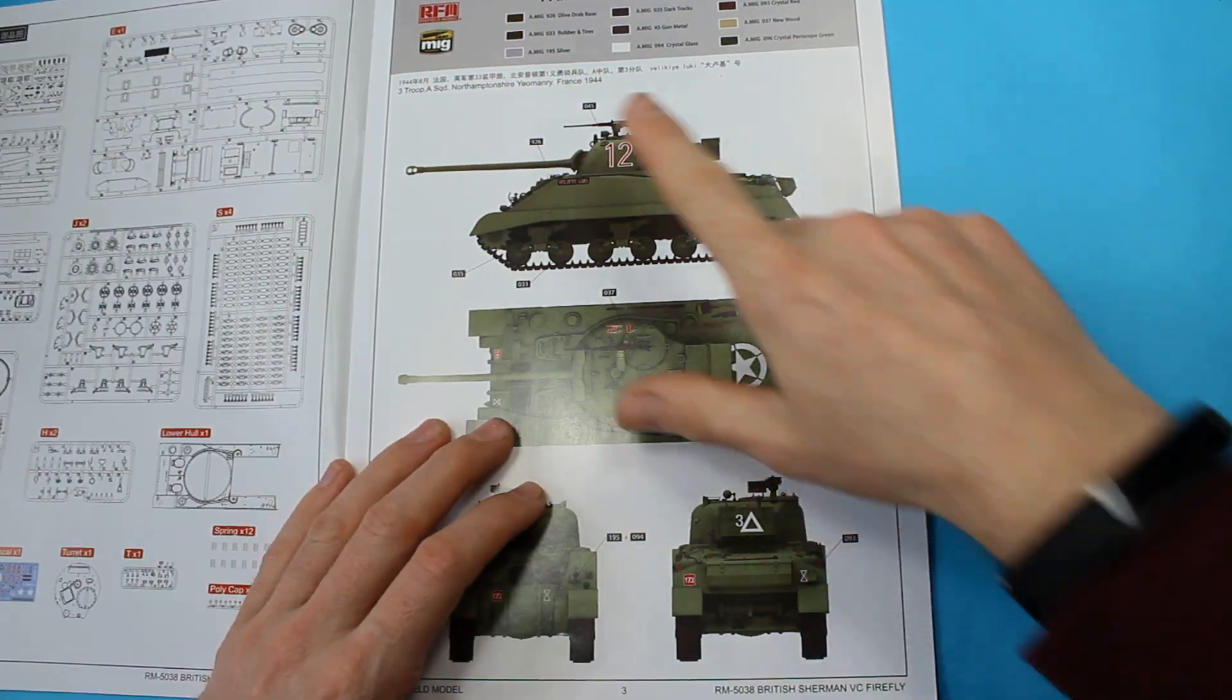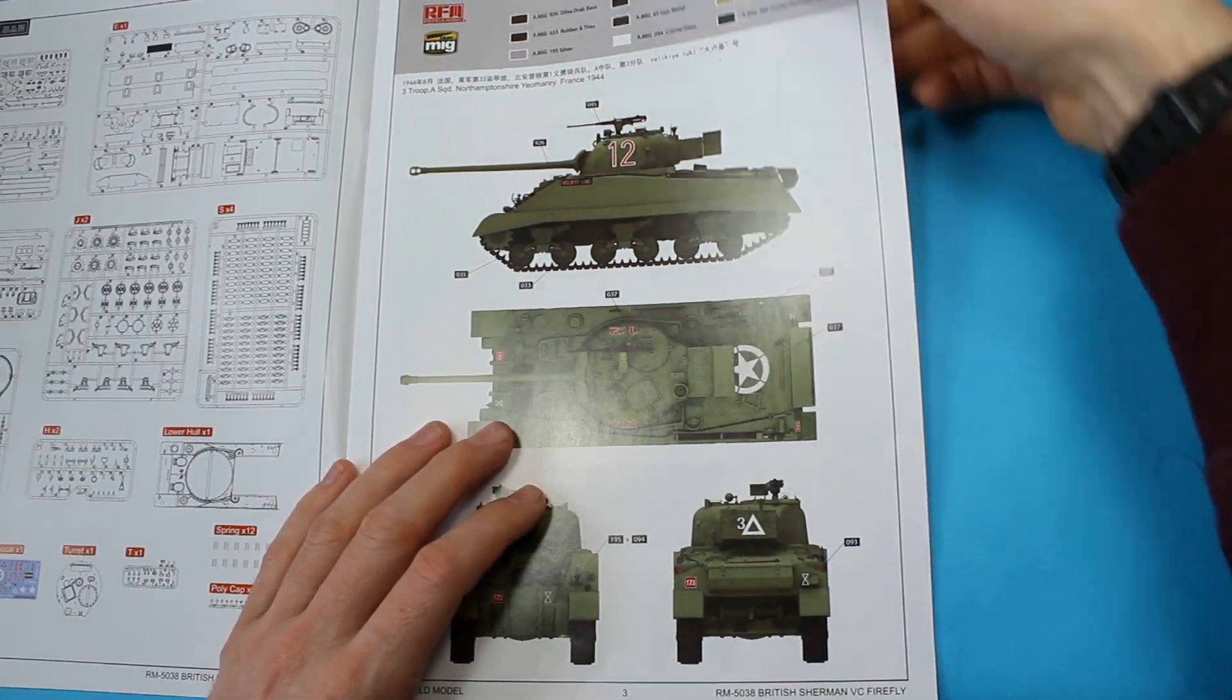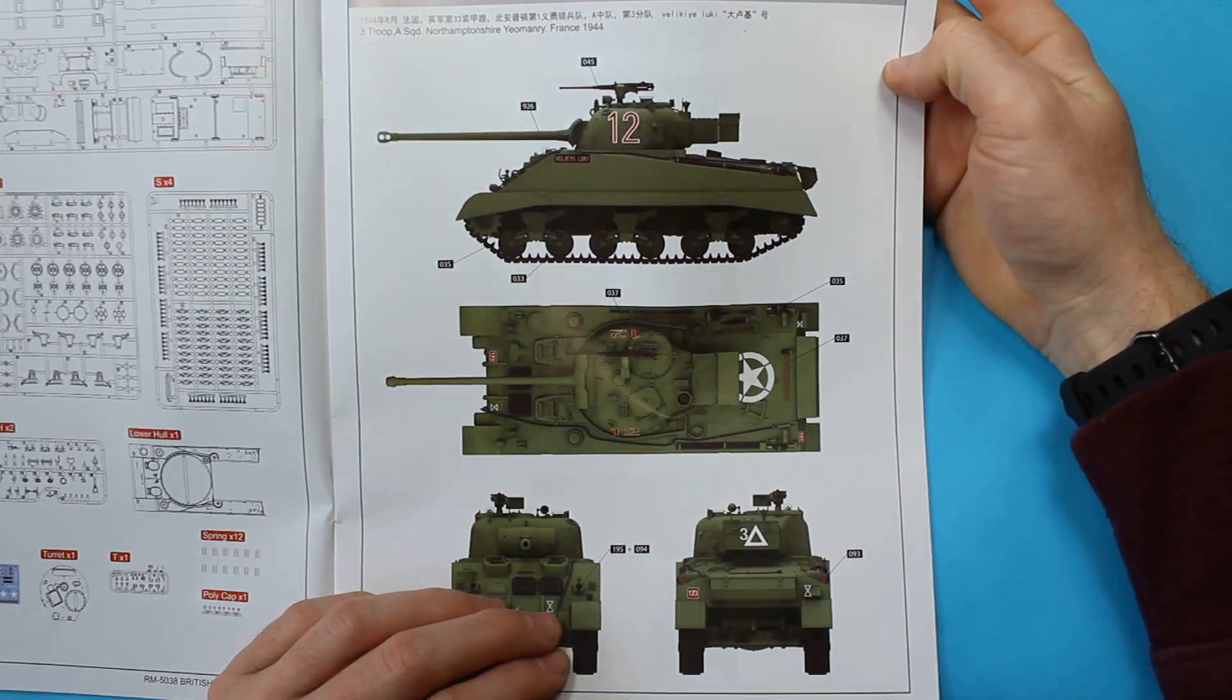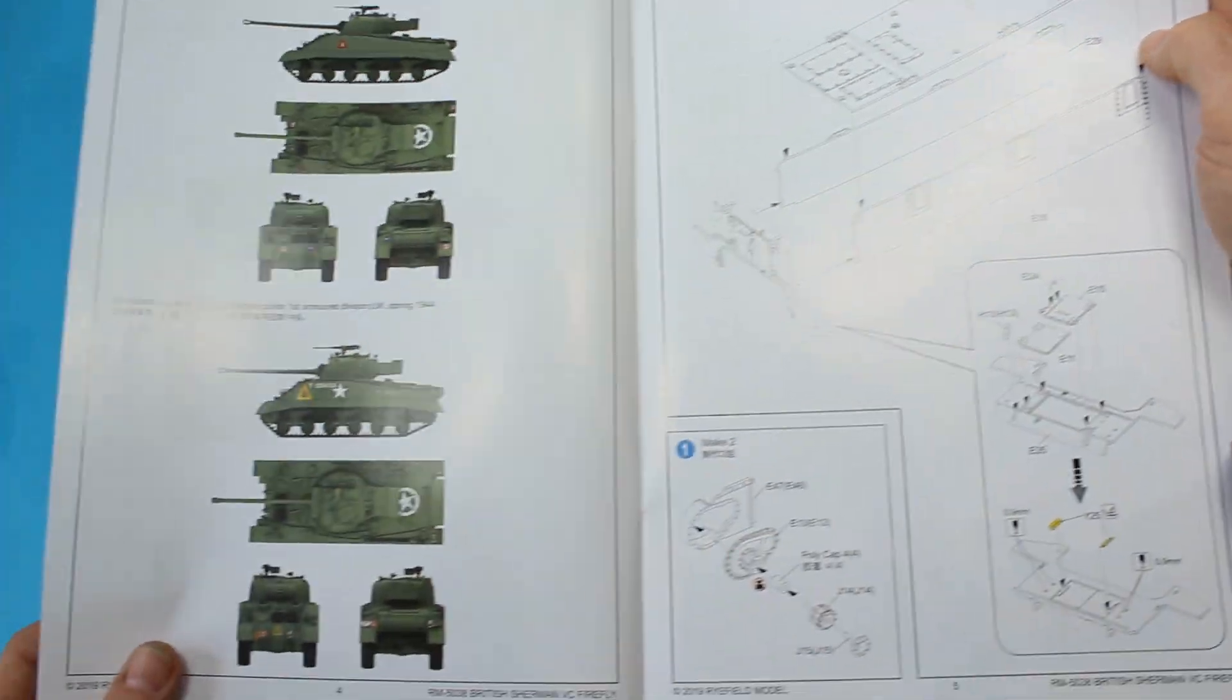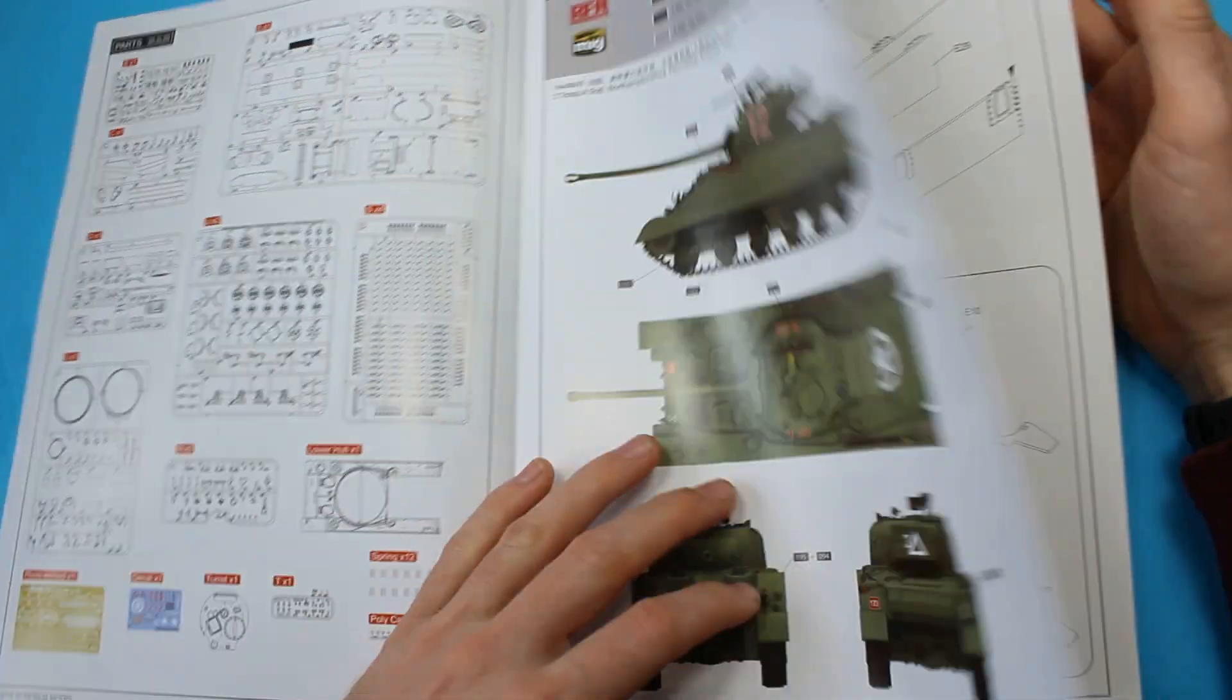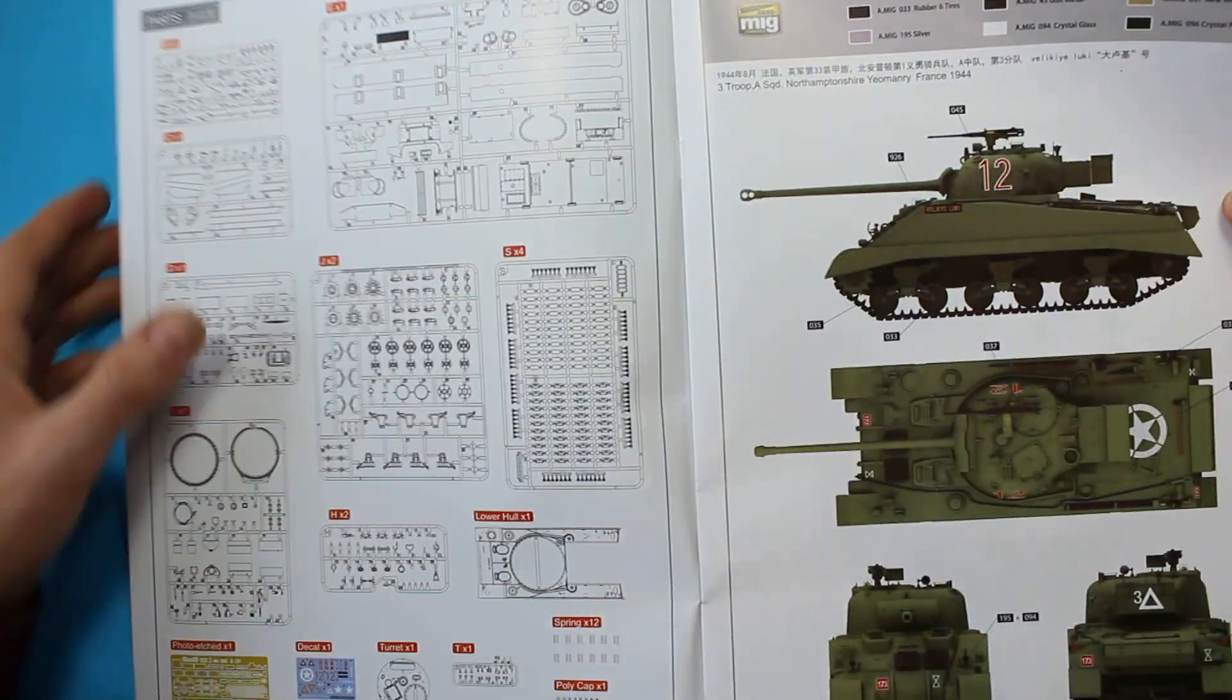Okay, so welcome back. This is the first part of the Rayfield Models Firefly kit. This is a brand new kit. It's the M4 Sherman Firefly version, which is the upgraded British one with a 17-pound gun wedged in the turret.